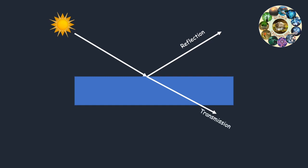In other cases, the transmitted ray will bend slightly when it enters the object. This bending is called refraction. You have probably seen this bending if you look through a glass of water with a straw.